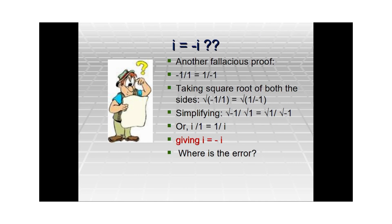Another fallacious proof: we start by saying −1/1 = 1/(−1), which is correct. Taking the square root on both sides, we get √(−1/1) = √(1/−1). Simplifying, √(−1)/√1 = √1/√(−1). Since √(−1) is imaginary — that's what is known as iota (i) — we get i/1 = 1/i, which leads to i = −i.